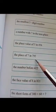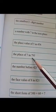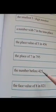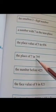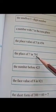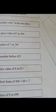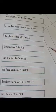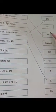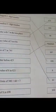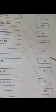Next one — the place value of seven in seven hundred and ninety-five. Seven's place value — seven is in the hundreds place. So the place value of seven is seven hundred. We have hundreds here.